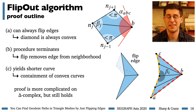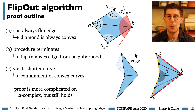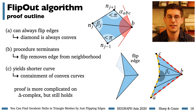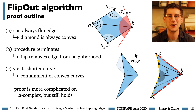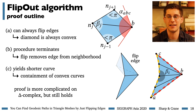I mentioned earlier that edge flips can create a delta complex, which makes our proofs considerably more complicated — in particular, proving termination becomes much more nuanced. A big part of our technical contribution is extending all of these proofs to the general case of a delta complex. The good news is that everything works out exactly as expected, and you can use the flip-out procedure as stated to always straighten a curve and find a geodesic.